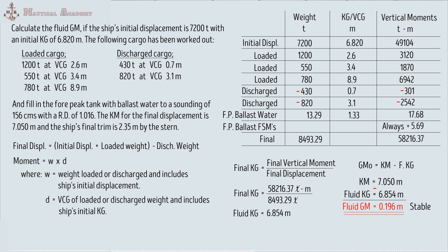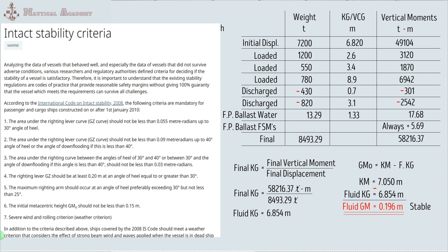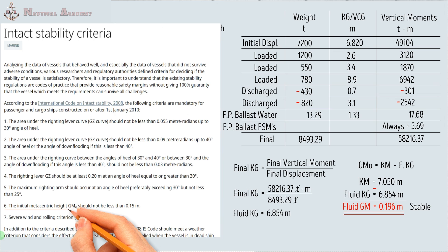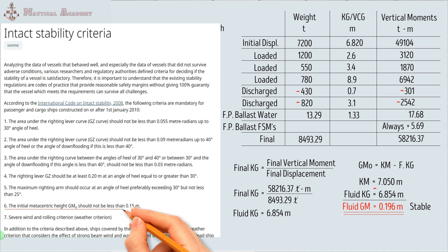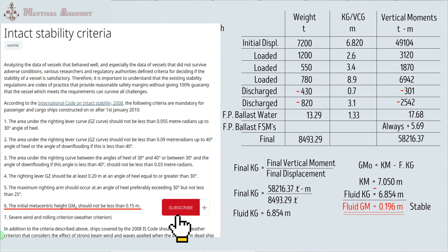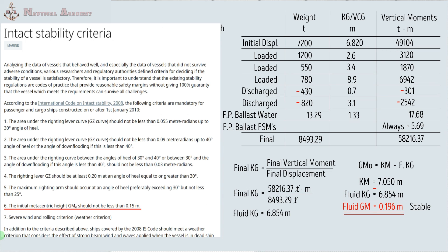For the intact stability criteria, number 6 states that the initial metacentric height should not be less than 0.15 meter. This refers to fluid GM since it is corrected for free surface. Based on our answer, we passed these criteria. That's all for now — see you in my next video. Thank you for watching.